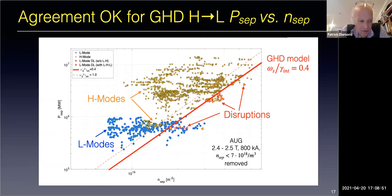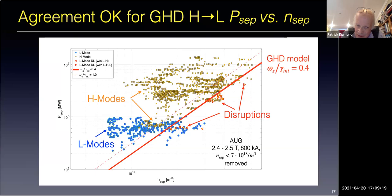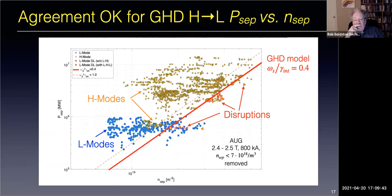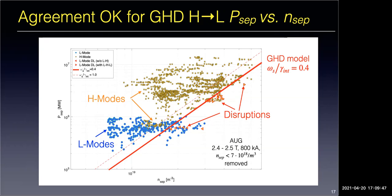Regarding back transitions: we've learned a lot about the L-H transition by stringing it out—slow forward transitions, I-phases, limit cycles. So what do we know about the evolution of the scrape-off layer during all this? If there was a very slow back transition, this is a challenge to the experimentalists.